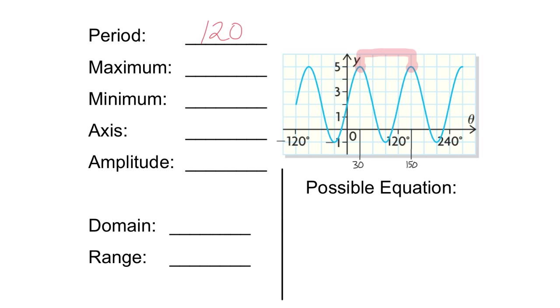Your maximum and your minimum values, you read that just off the y-axis—your highest and your lowest values. The axis, or the central axis, well, that's right through the middle. You can think of it as halfway between your maximum and your minimum. So halfway between 5 and negative 1 is 2. So when I write the axis, remember, it's an equation. So it's y equals 2. That's what y equals on that central line.